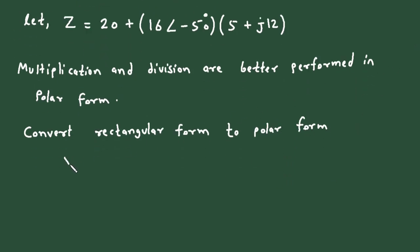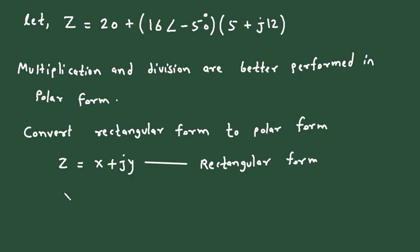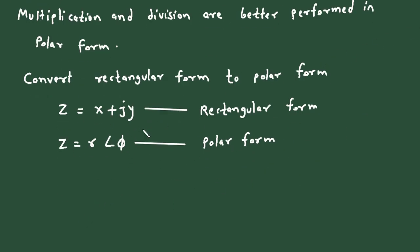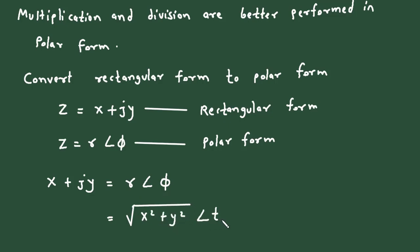What is rectangular form? z equals x plus jy — this is called rectangular form. What is polar form? z equals r at an angle phi — this is called polar form. To convert rectangular to polar, we use the formula: r equals the square root of x-squared plus y-squared, at an angle phi equals tan inverse of y divided by x.